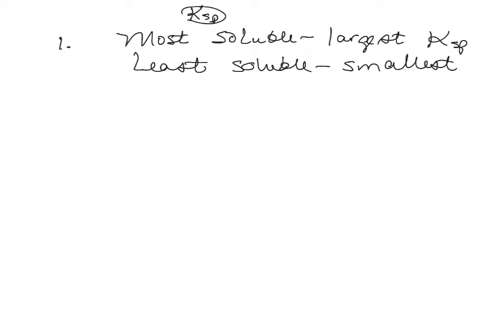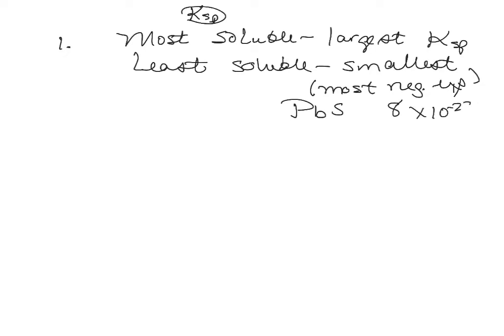When talking about scientific notation, smallest means the most negative exponent. The answer for this one was lead sulfide, which has a KSP of 8 times 10 to the minus 28 — so almost none of that dissolves.